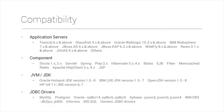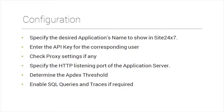For Java APM requirements, you need to check compatibility — what application servers, JVM versions, and JDBC drivers are supported. For configuration, specify the desired application name to display in the Site247 dashboard, get the API key from the Site247 console, configure any proxy settings, and determine the APDEX threshold — which defines the measurement for user tolerance. You can also enable SQL queries and traces as required.